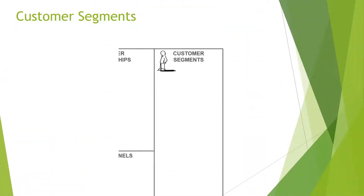The first thing we want to do is look at the far right side of the canvas. We start with the customer segments. This is really important — identifying who our customers are, in other words, who are we getting revenue from, who is paying us for products or services. That is obviously a very important thing for a business.